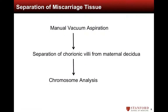We will now review the procedure for separating miscarriage tissue from maternal decidua for chromosome analysis. An MVA is first performed, followed by separation of chorionic villi from maternal decidua using a technique which we will demonstrate. The villi are then sent for chromosome analysis.